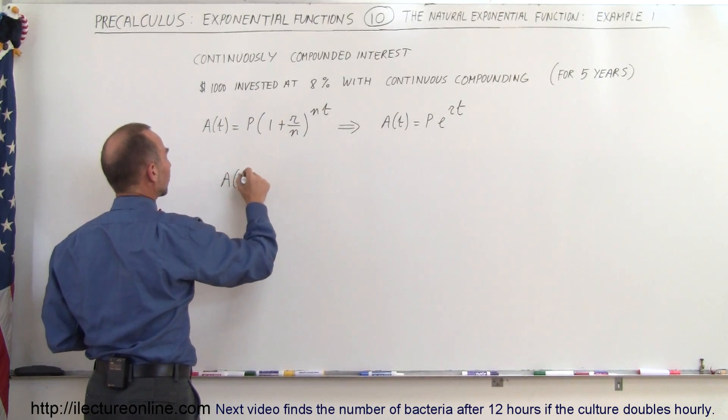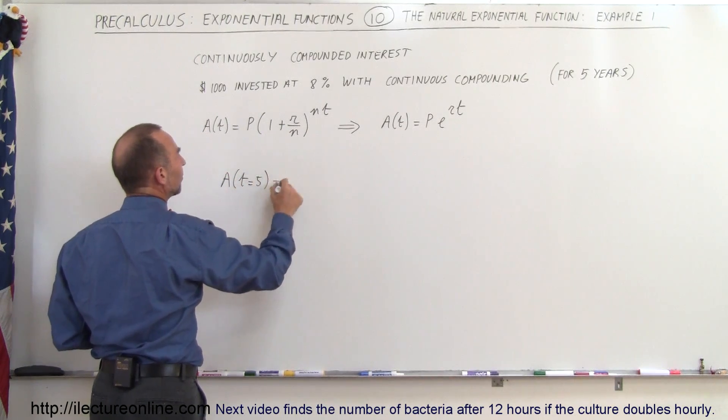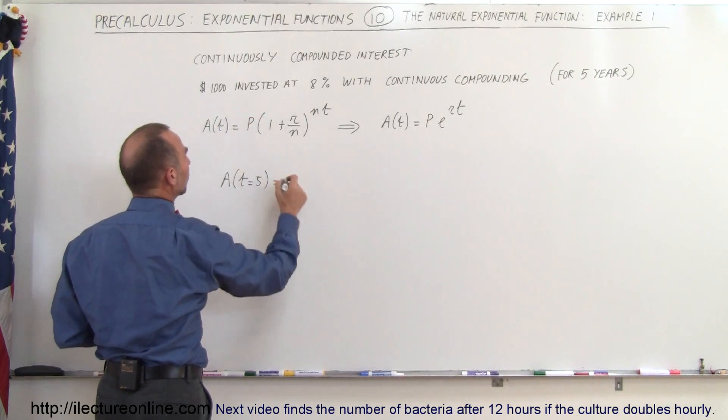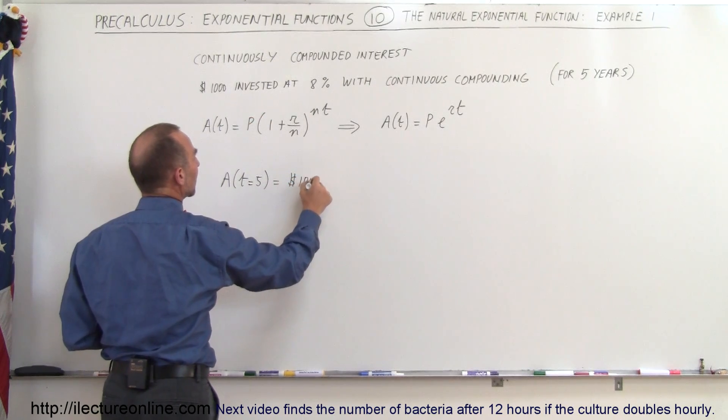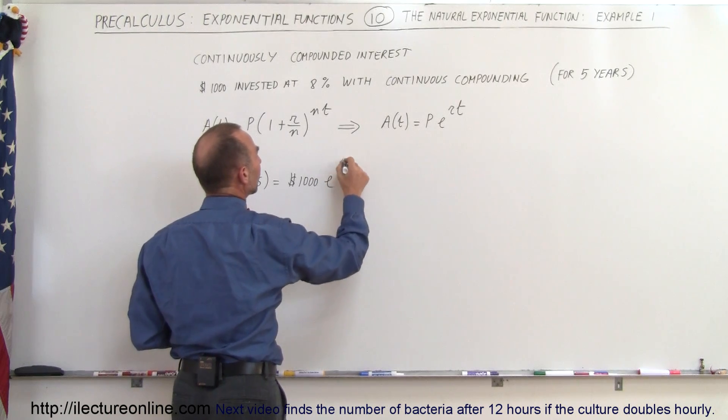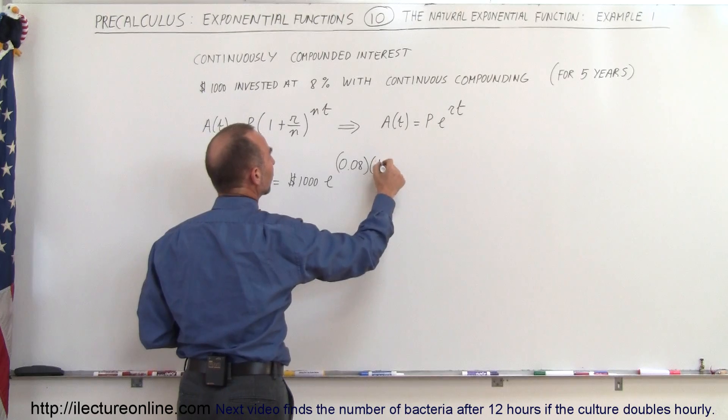So the amount earned after t equals five is equal to the initial principle, which is a thousand dollars invested, times e to the rate, which will be 0.08 times the number of years, so t would be equal to five.